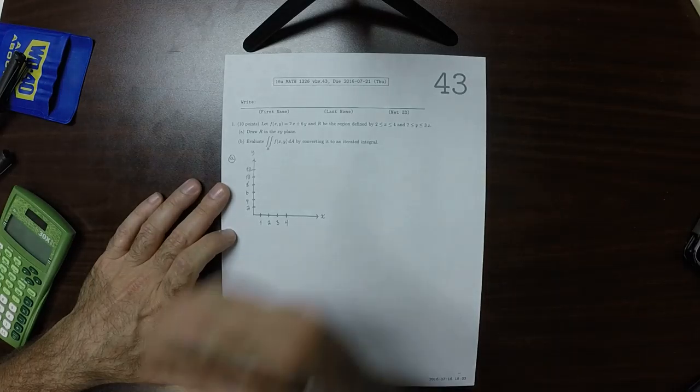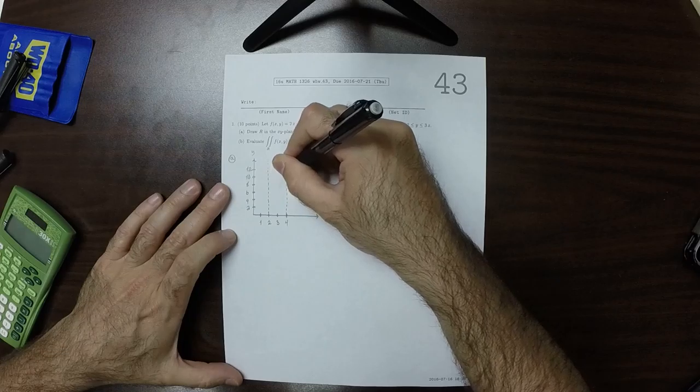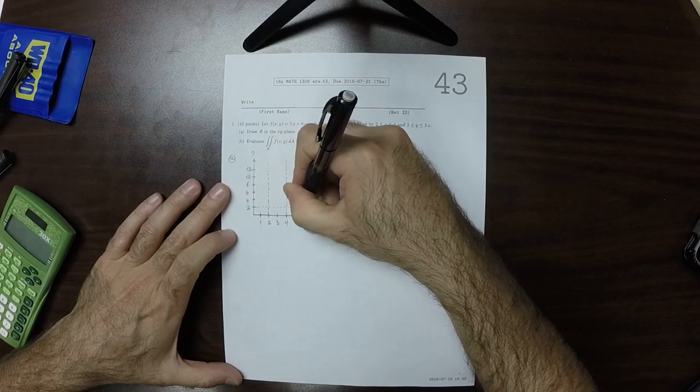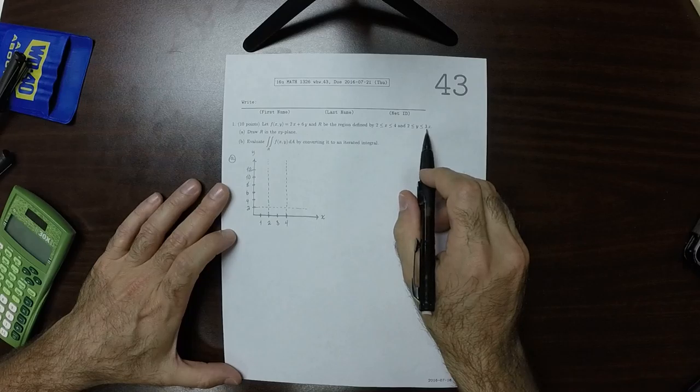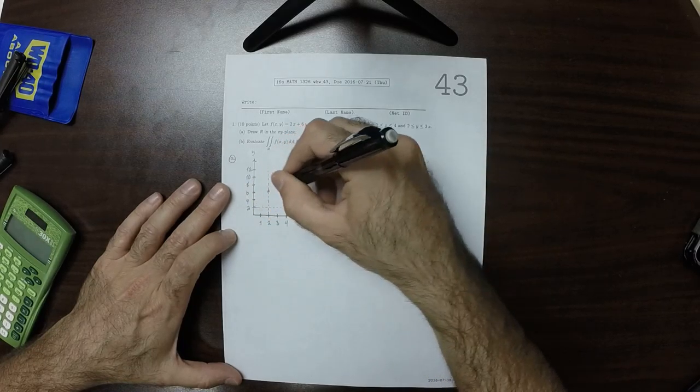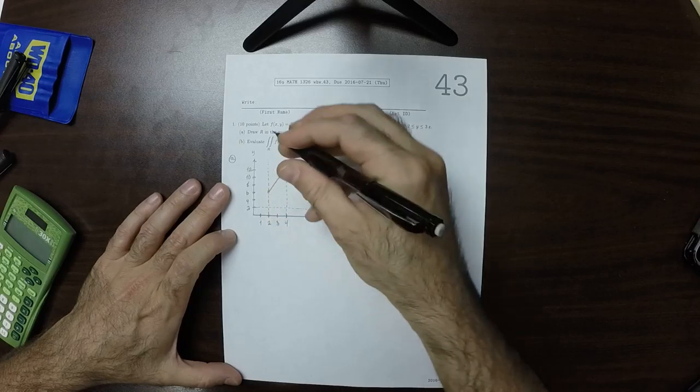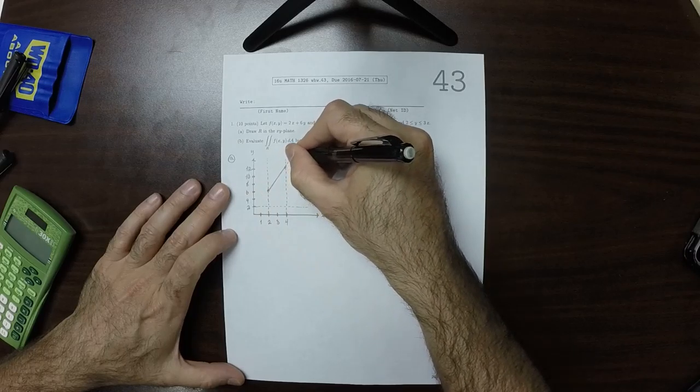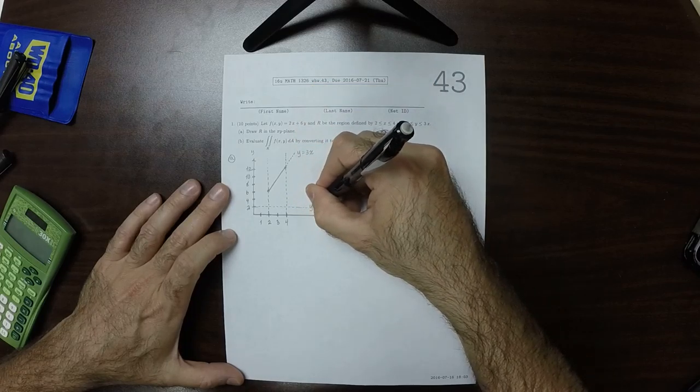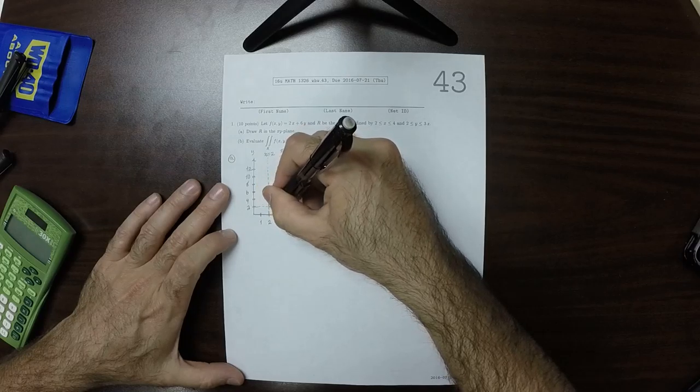So the x-bounds are 2 to 4. So that's 2, 4. The lower y-bound is 2. The upper y-bound is y is 3x. So that would be from here, because 3 times 2 is 6, to here because 3 times 4 is 12. So this is y is 3x, y is 2, x is 2, and x is 4. And the region we're talking about is this.